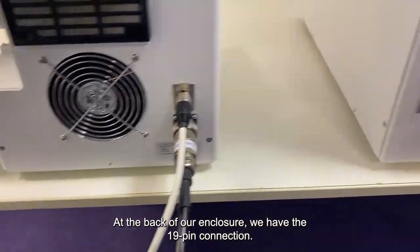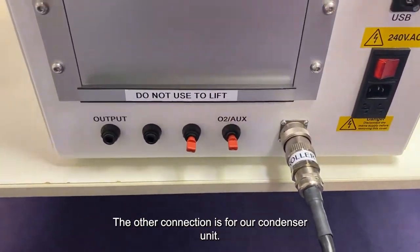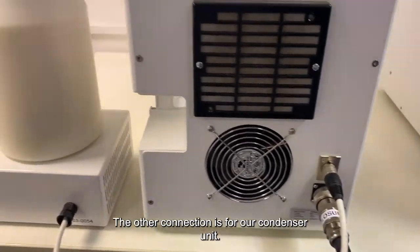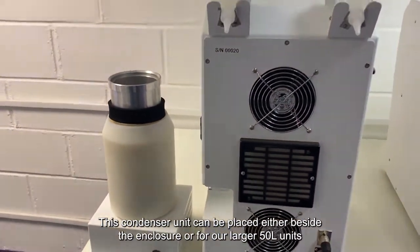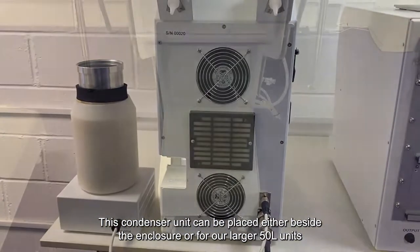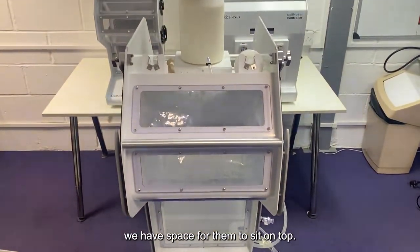At the back of our enclosure, we have the 19-pin connection, and the other connection is for our condenser unit. This condenser unit can be placed either beside the enclosure, or for our much larger 50 litre units, we have space for them to just sit on top.